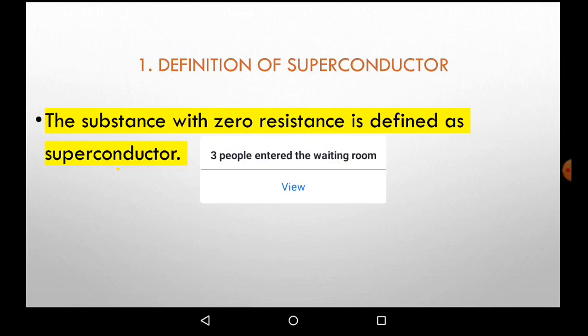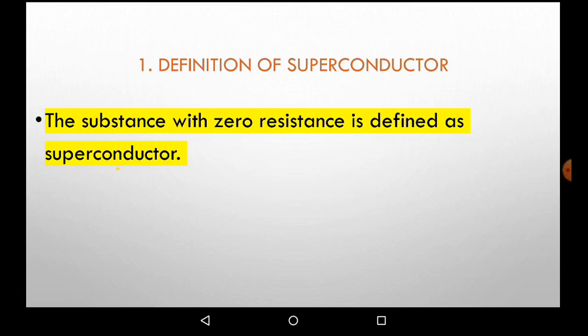What is a superconductor? By its name itself, a superconductor has infinity of conductivity. Superconductors are materials which have zero resistance — the resistance of the superconductor is zero. Once the resistance is zero, the current flowing through the superconductor is infinity, meaning current flows through the material with no obstruction. There is no opposition to stop the current.